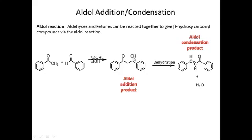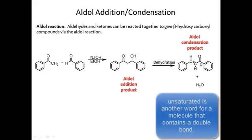If this beta-hydroxyketone dehydrates — meaning if we lose water — then we have a double bond formed where the OH is, and we get the aldol condensation product, which is the actual chalcone. Another name for this would be an alpha-beta unsaturated carbonyl compound.